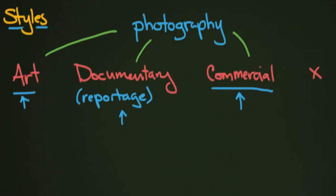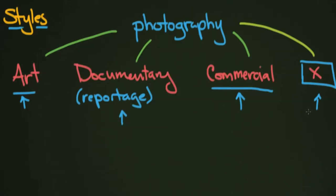Then there's this other group I call the X group. I haven't fully defined it, but basically these are people using photography to make a sort of public record — not documentary in the sense of a magazine, but maybe police officers or salespeople using photography in their work but not in any of the other formats. I haven't found a name for it anywhere, so I'm just leaving it as the X group.